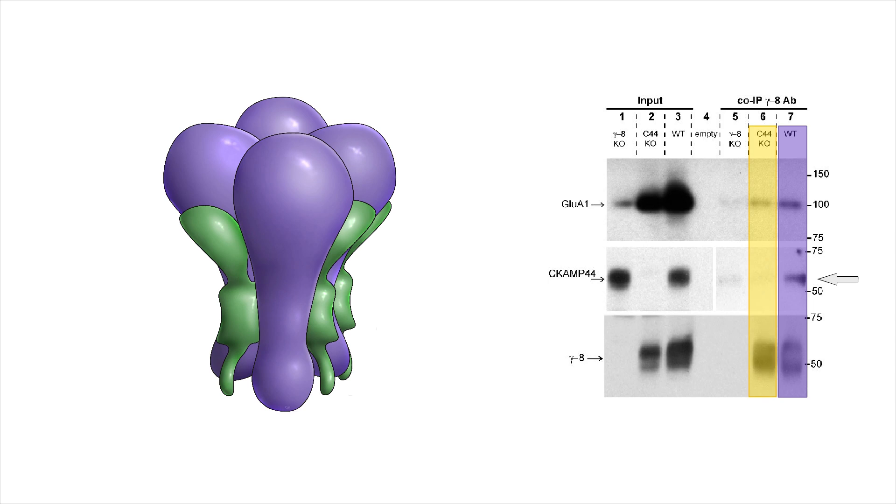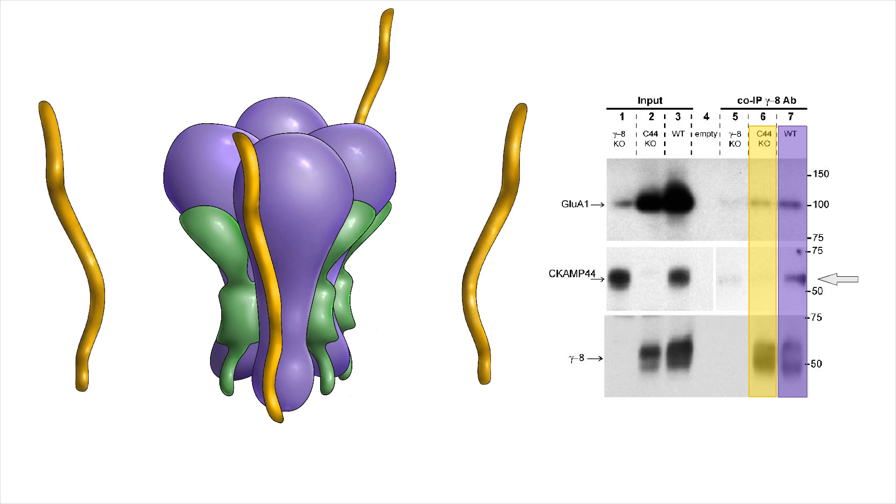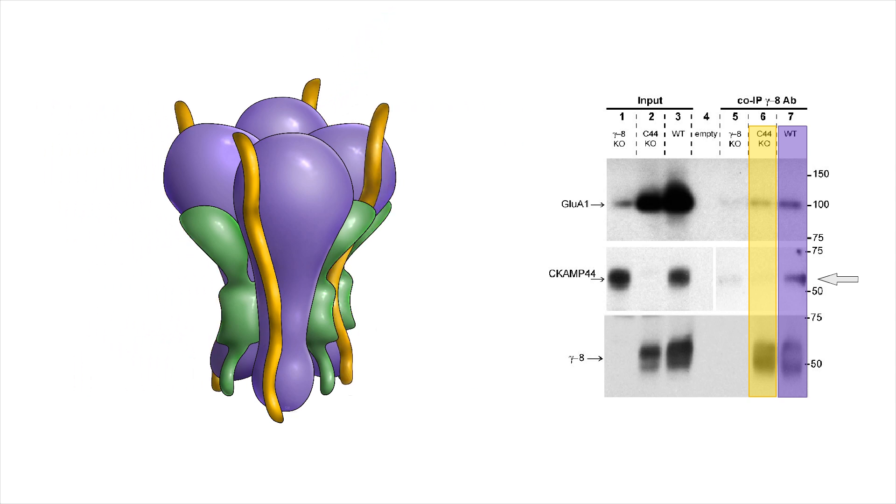Thus, CKAMP44 can interact with the TARP-γ8 bound AMPA receptors, although the stoichiometry of CKAMP44 binding to AMPA receptors still has to be investigated.